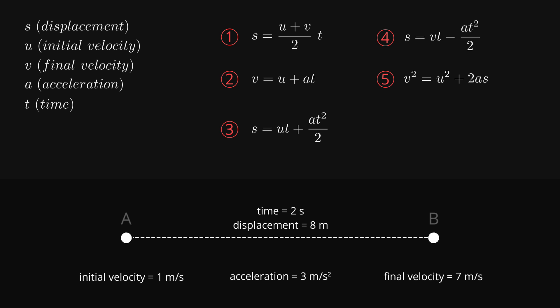So each of the SUVAT equations uses a different combination of 4 out of these 5 variables. Thus, as long as we know the values for any 3 of them, we can use the equations to calculate the unknowns. It's important to note that these equations are only applicable to objects moving with constant acceleration, and in a straight line.